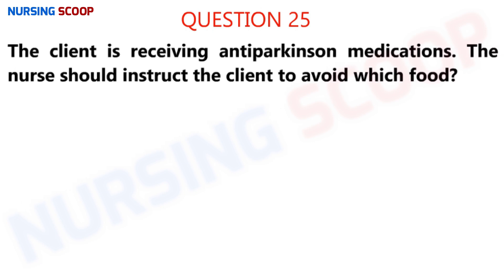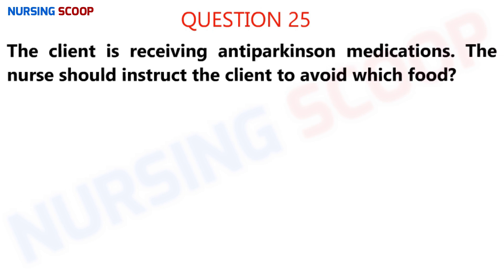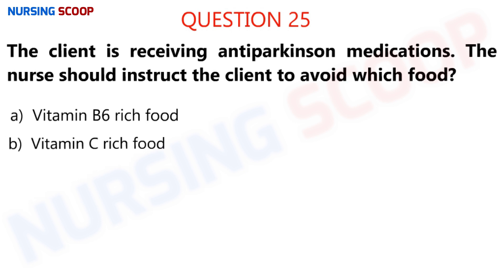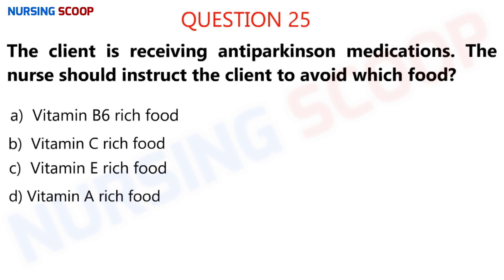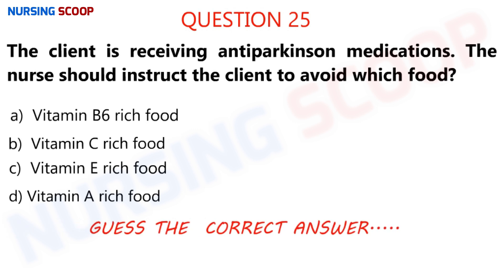Question number 25: A client is receiving anti-Parkinson medication. The nurse should instruct the client to avoid which food? Option A is food high in vitamin B6. Option B is vitamin C. Option C is vitamin E rich food. Option D is vitamin A rich food. The right answer is option A.